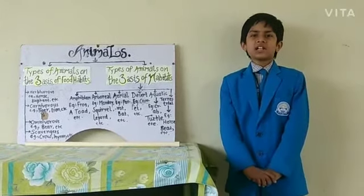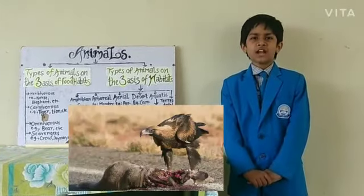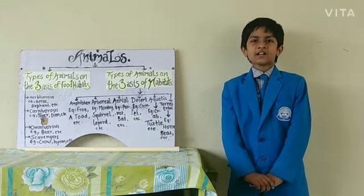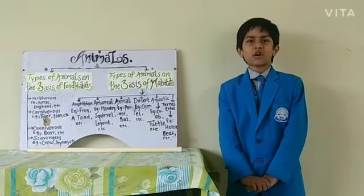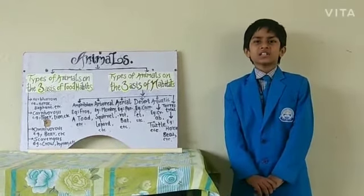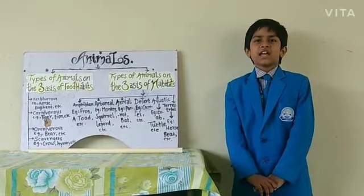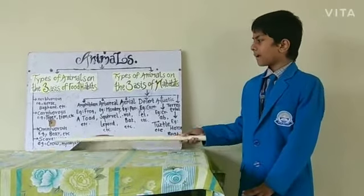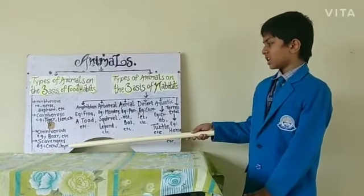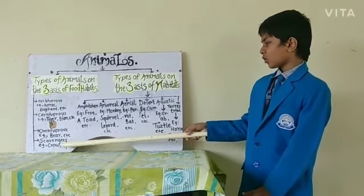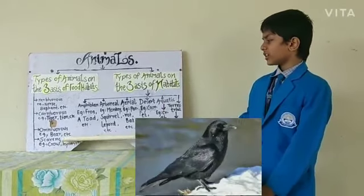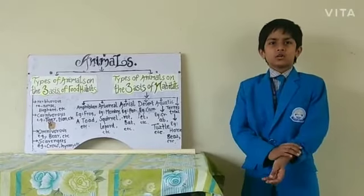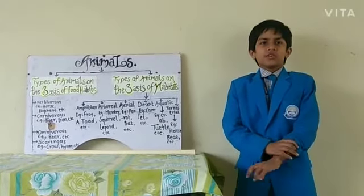Next, animals that eat the flesh of dead animals and help clean jungles and roads are called scavengers. For example, vulture, hyena, crow, etc.